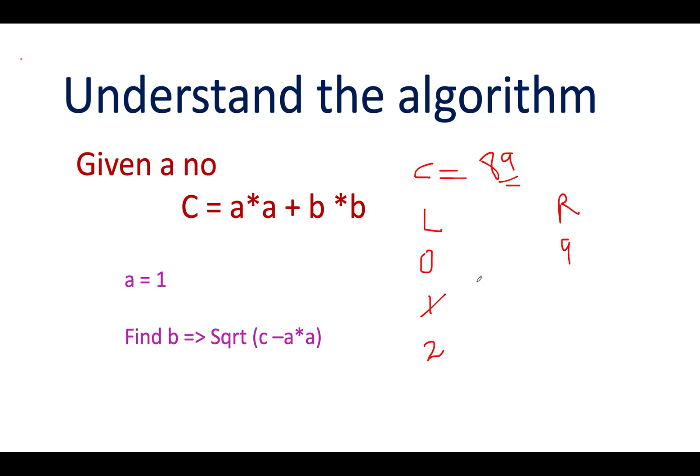You'll increment the value of left, so left gets updated to 3. 3² + 81 turns out to be 90, and this value turns out to be greater than c. What you're going to do is reduce the value of right. So right gets reduced to 8.